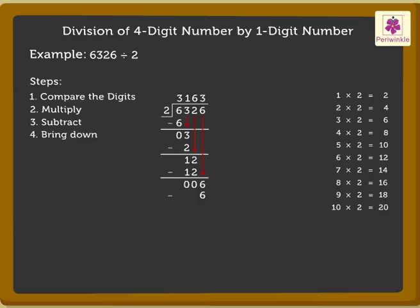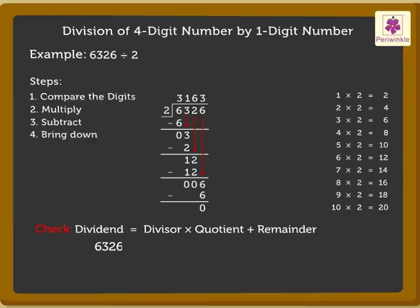Subtract 6 from 6. The remainder 0 is written in the ones column. Our division is complete and it is time to check our calculations. Dividend is equal to divisor into quotient plus remainder. 6,326 is equal to 2 into 3,163 plus 0. That is 6,326 plus 0. So, here we get 6,326 is equal to 6,326. This proves that we have solved the question correctly.